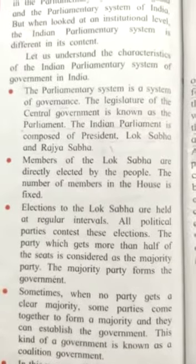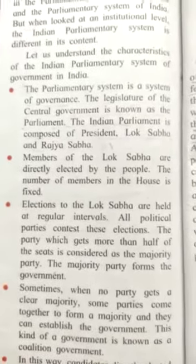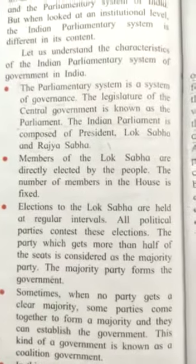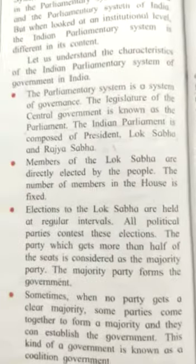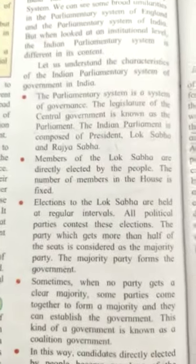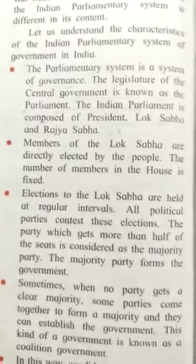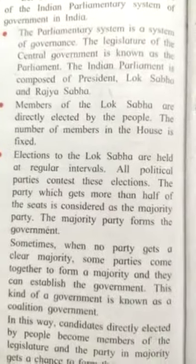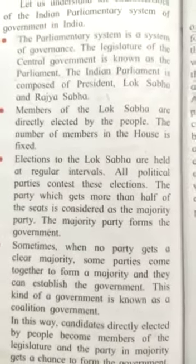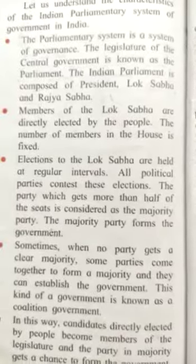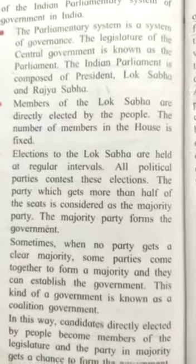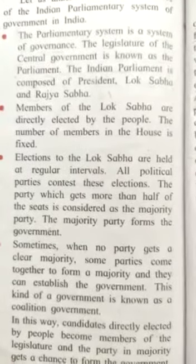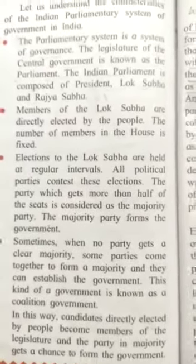Elections to the Lok Sabha are held at regular intervals. All political parties contest this election. The party which gets more than half of the seats is considered the majority party, and the majority party forms the government. Sometimes, when no party gets a clear majority, some parties come together to form a majority — this kind of government is known as a coalition government.